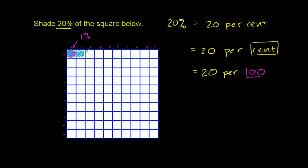we'd do 1, 2, 3, 4. Actually, if we shade this entire row, that will be 10%. 1, 2, 3, 4, 5, 6, 7, 8, 9, 10.